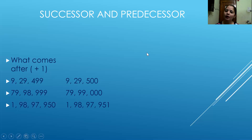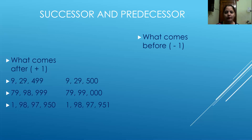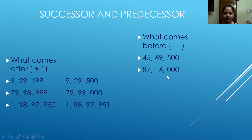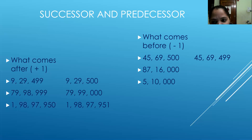In the same way, we are going to find the predecessor also. Predecessor means what comes before the number, so in this case we are going to subtract one from the number to find the answer. For example, 45,69,500 — I will subtract one from it. This will make my answer 45,69,499. Because minus one from 500 gives me 499, and all other digits remain the same.